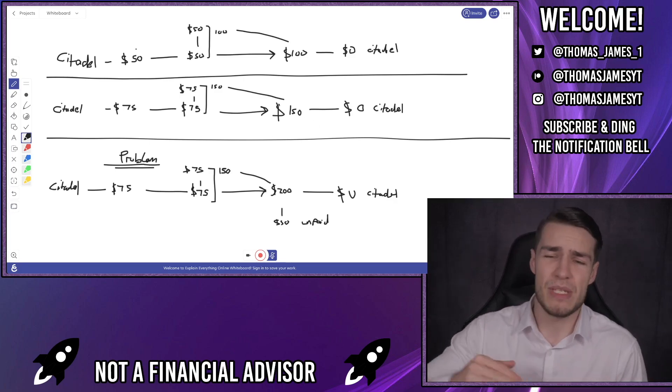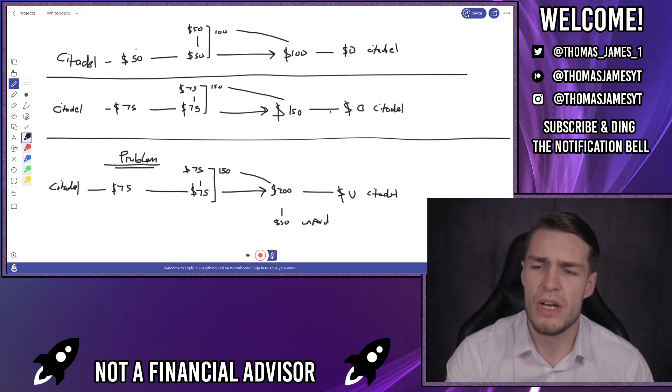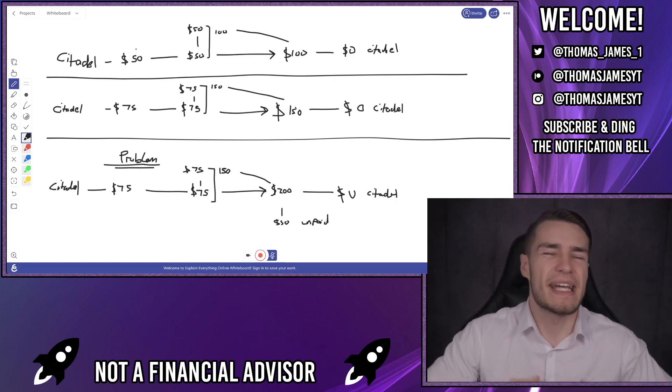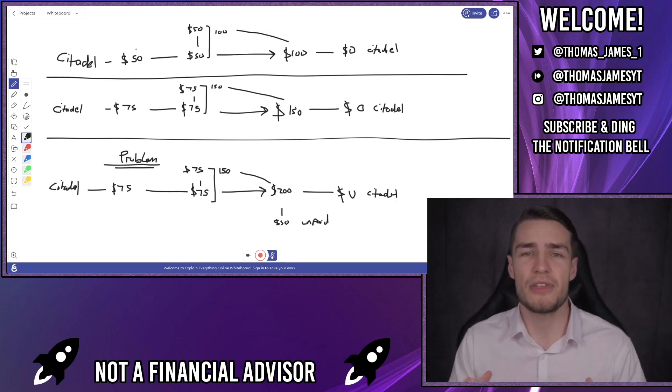Therefore it increases Citadel's liquidation point to $150 per AMC share. Now what happens when AMC runs up to $150? Obviously Citadel get liquidated and that $150 that's in the trade is used to buy back those shares and cover their short position. So therefore at this point the DTCC aren't even getting involved. It's solely Citadel's position in the trade which is used to buy back the shares.